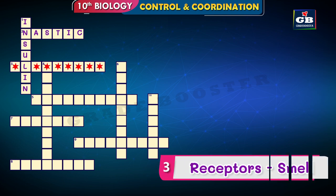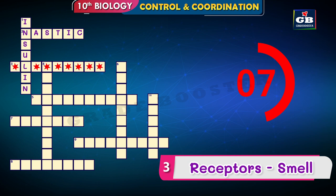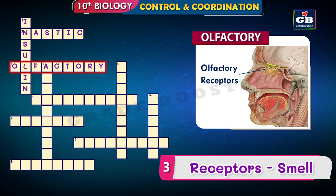Let's see the next one. Third across — receptors, smell. With these two hints we have to find the answer. The answer is olfactory. Olfactory receptors are present in the nose and they help in the perception of smell.